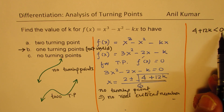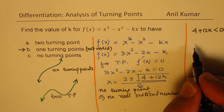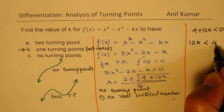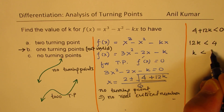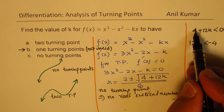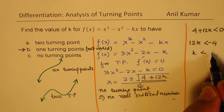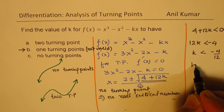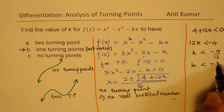Solving this inequality, we take 4 to the other side and get 12k < -4, so k < -4/12, which simplifies to k < -1/3.